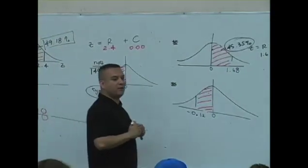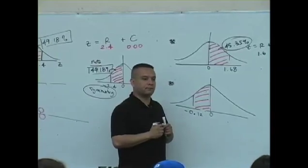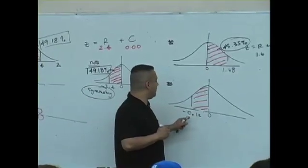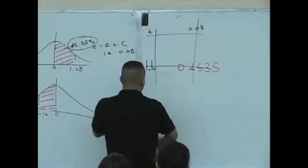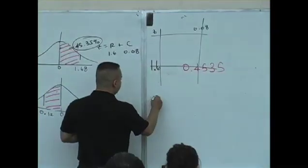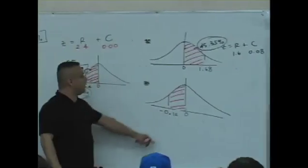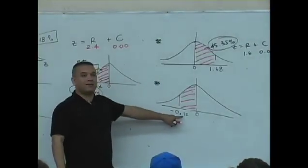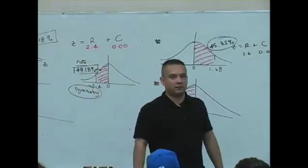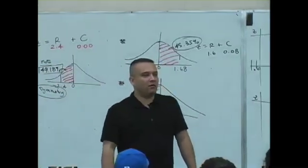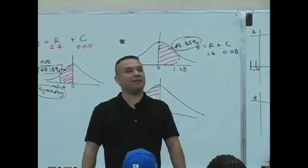Now, what about the second one? What does it say? What about this one down here? What are you looking for here? Oh, it's negative. Uh-oh. Can somebody find a negative table? Why? Why do we only use one table? Because of symmetry. Yes.